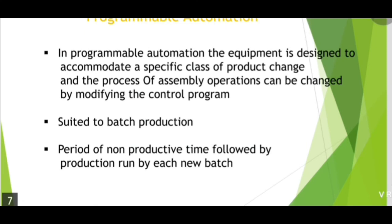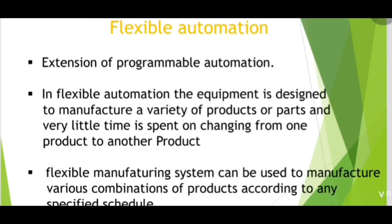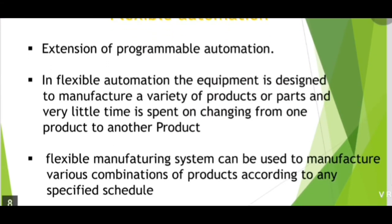Second type is programmable automation. In programmable automation, the equipment is designed to accommodate a specific class of production change, and the process or assembly operation can be changed by modifying the control program. It is suited to batch production, with a period of non-productive time followed by a production run for each new batch.